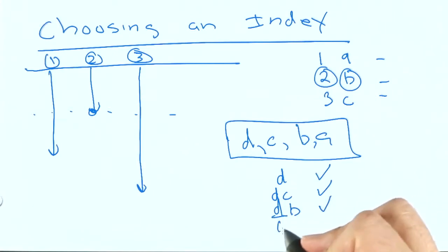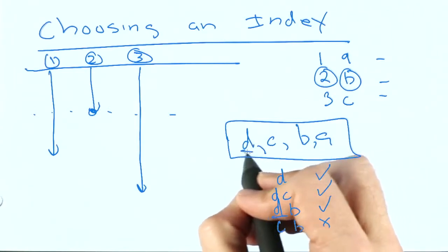If you specify C and B, it cannot use it, because it didn't have the D part included.